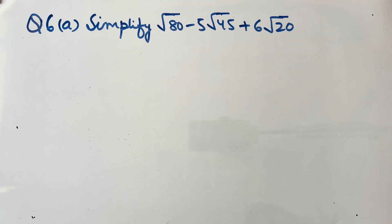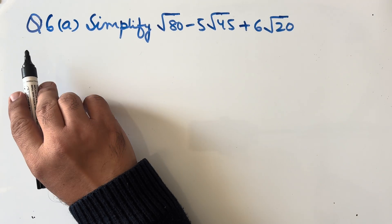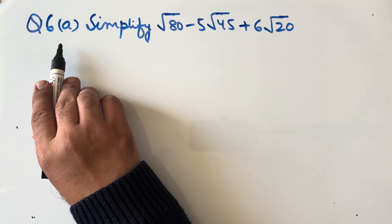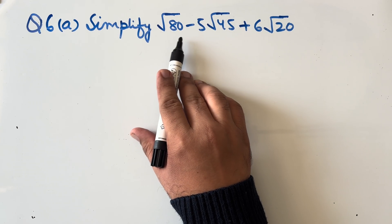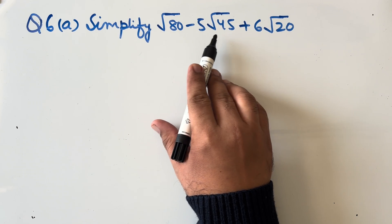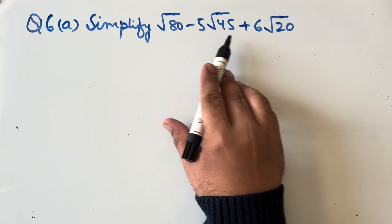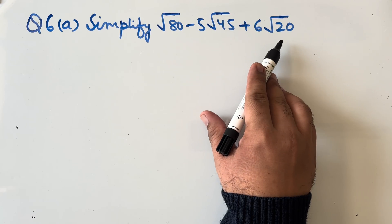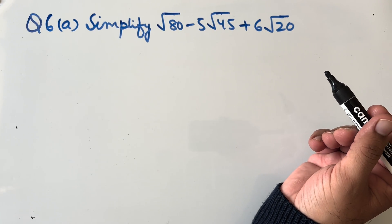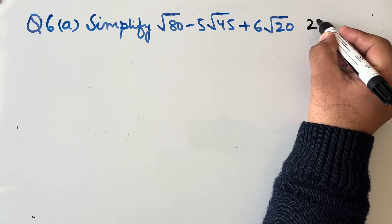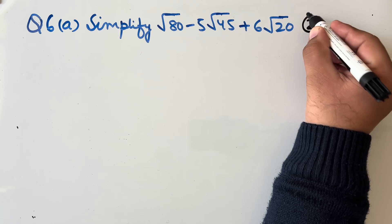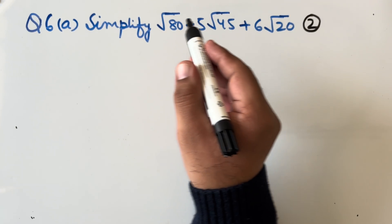Hello students, this is the second part of the predicted paper video. Question 6a: simplify √80 − 5√45 + 6√20. This question is from the third chapter and is worth two marks.